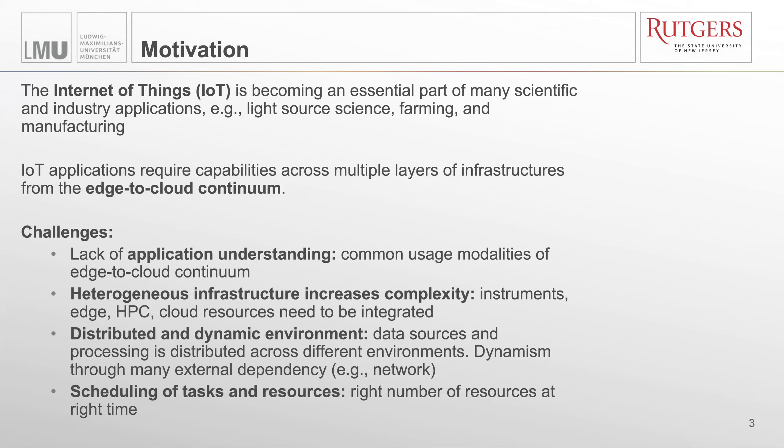In farming, IoT and data analytics is increasingly used to understand all kinds of aspects of agriculture, for example, energy and water usage. IoT sensors are also used in manufacturing environments. Data collected in such environments is crucial for use cases like predictive maintenance, visual inspection, and warehouse optimization, to name just a few.